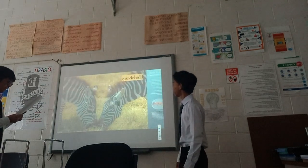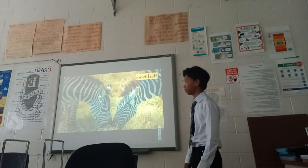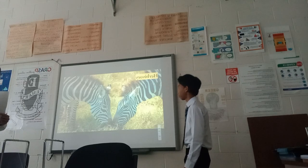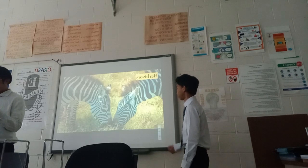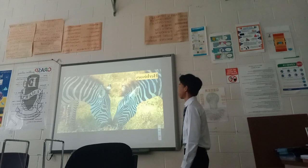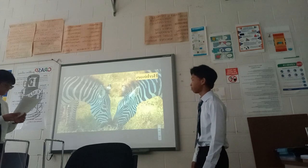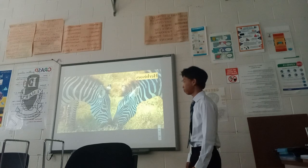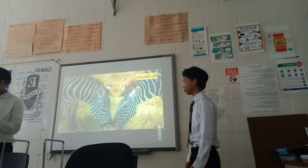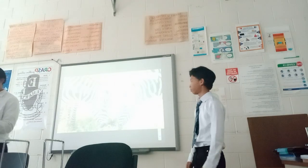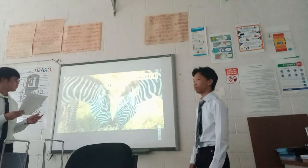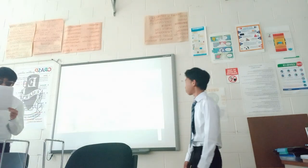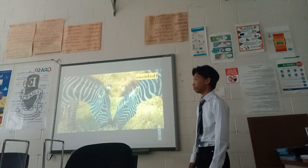Herbivory involves the consumption of plant materials by herbivores. Herbivores have specialized adaptations to extract nutrients from plants, such as specialized teeth, digestive enzymes, and long digestive tracts. Examples include zebras feeding on grasses and giraffes browsing on tree leaves. Herbivores affect plant populations by influencing their growth and survival. In response, plants have evolved defensive mechanisms such as thorns like those found on cacti, or bitter tastes like in wild cucumbers, which discourage herbivores from consuming them.